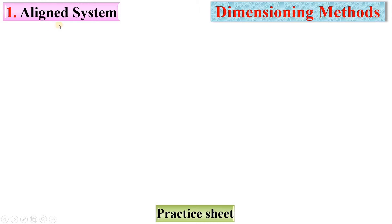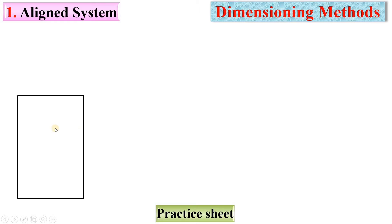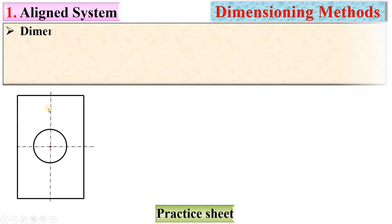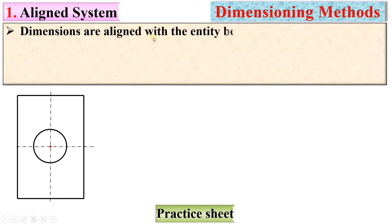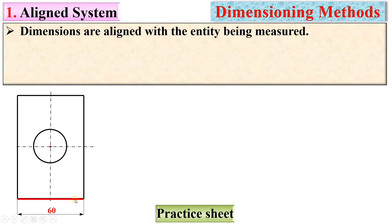Now let's look at the aligned system in detail. Here is a simple figure — a rectangle with a circle and a center line, sometimes called the axis line. In the aligned system, dimensions are aligned with the entity being measured. So if I want to give the dimension of a line, the dimension must be aligned with that entity.